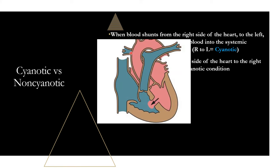In non-cyanotic conditions, oxygenated blood from the left side moves to the right and gets pumped into the lungs, but nothing is getting pumped out from the non-oxygenated side, so you're not having contamination. Whether it's a right-to-left or left-to-right shunt depends on which side has higher pressure. Normally it's the left side of the heart that has higher pressure because it has to pump to the entire body. So normally the left side wins.